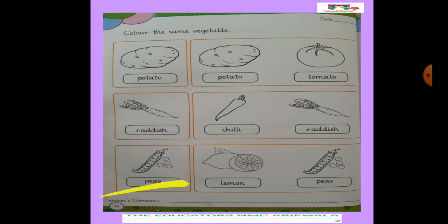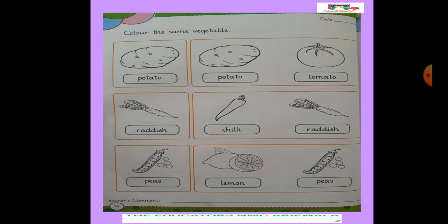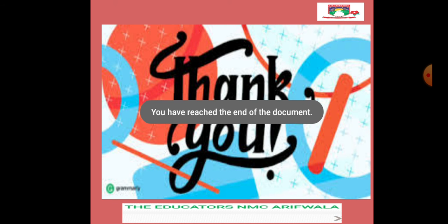This is page 36. First, you have to write the date. We have to color the matching vegetables — make an outline first. There are different rows: the first row has potato, tomato, potato — color the two potatoes. The second row has radish, chili, and radish. The third row has peas, lemon, and peas — color the vegetables in two areas. Thank you, God bless you. Goodbye, children.